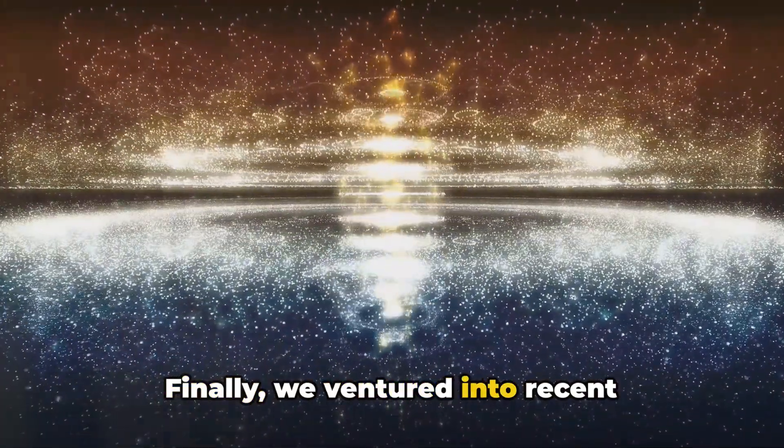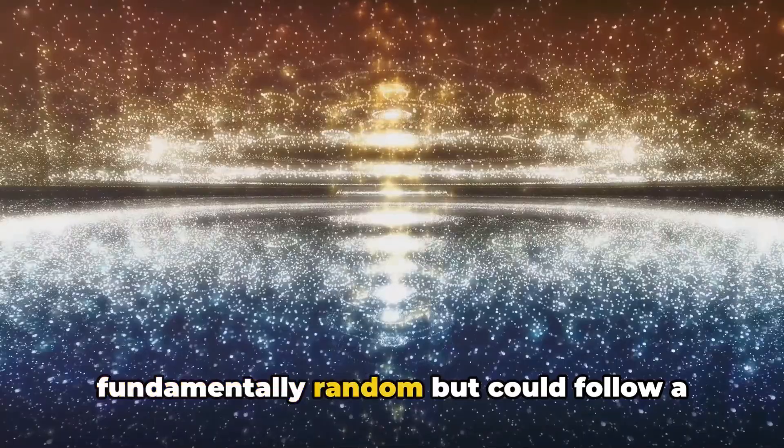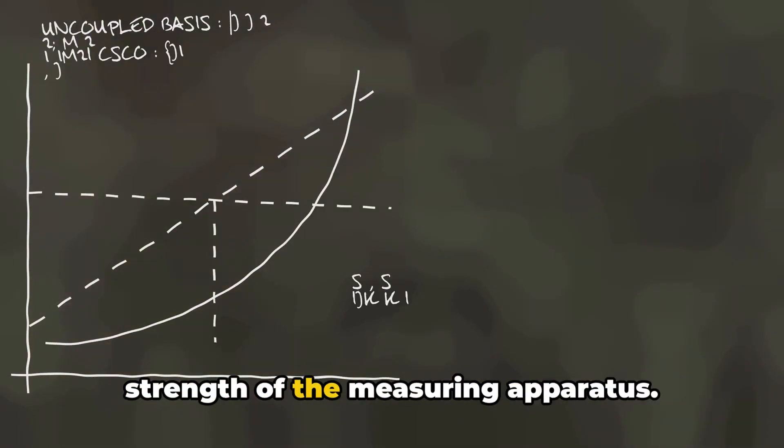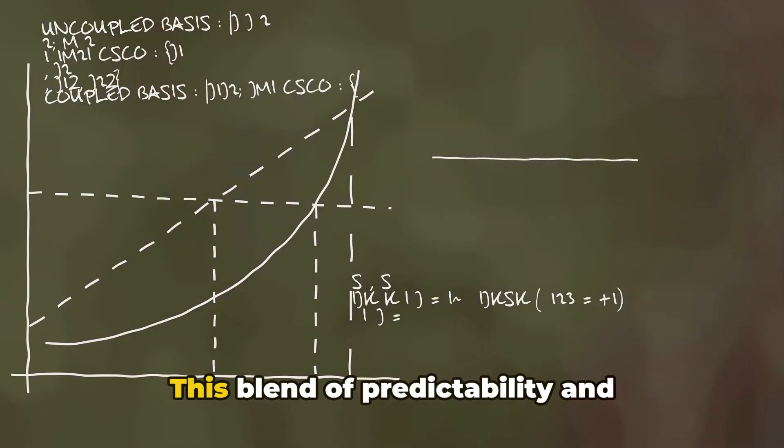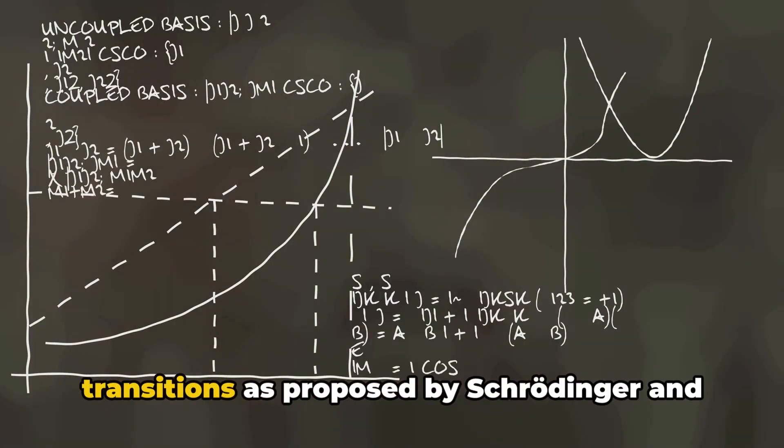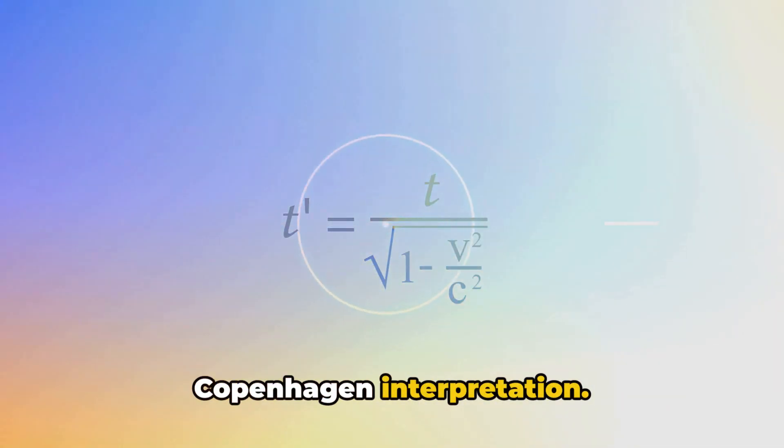Finally, we ventured into recent theoretical insights, which suggest that quantum transitions might not be fundamentally random, but could follow a predictable pattern influenced by the strength of the measuring apparatus. This blend of predictability and randomness supports both continuous transitions, as proposed by Schrödinger, and the probabilistic nature endorsed by the Copenhagen interpretation.